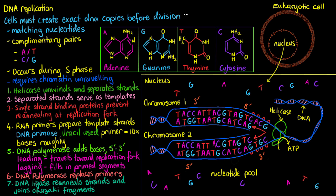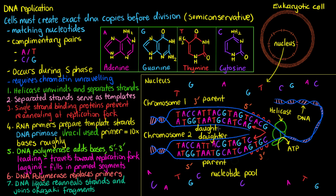We call this whole process semi-conservative DNA replication. Semi-conservative means that within each new cell, we have one strand that is the parent strand from the original cell, and one strand which is a brand new daughter strand synthesized during DNA replication. That's the whole process complete. I hope this video has been helpful — thanks for watching and I'll see you again soon.